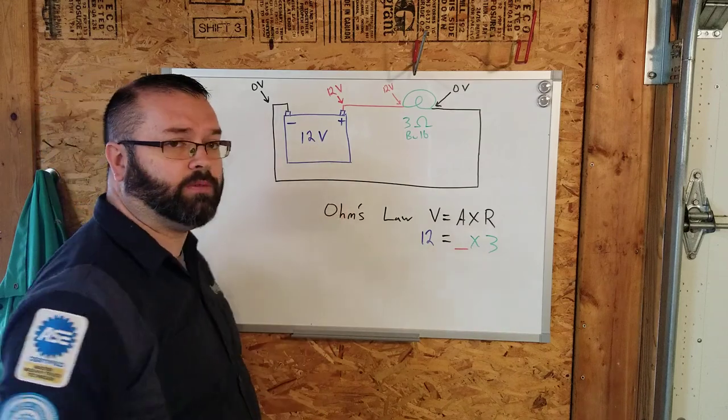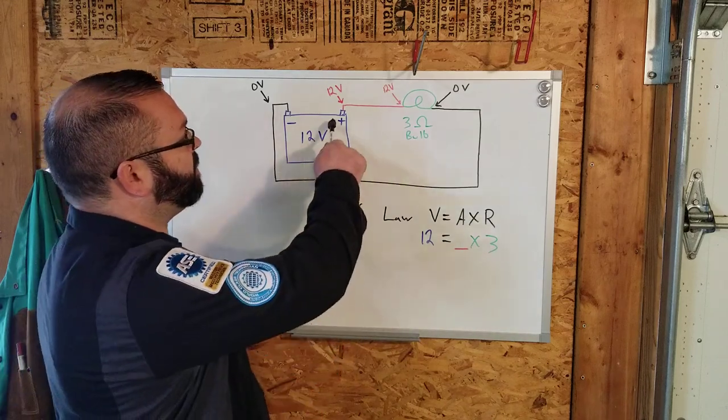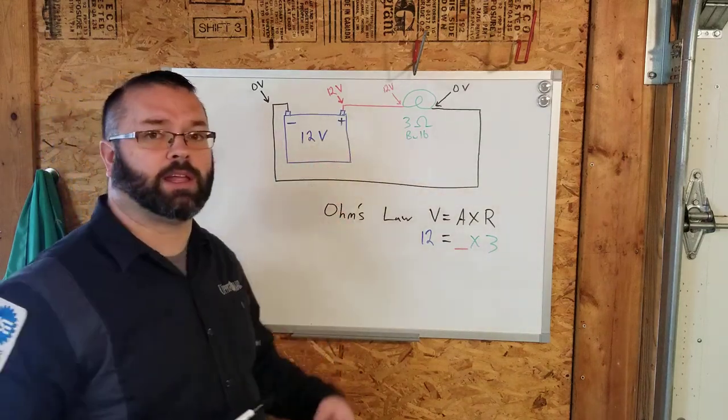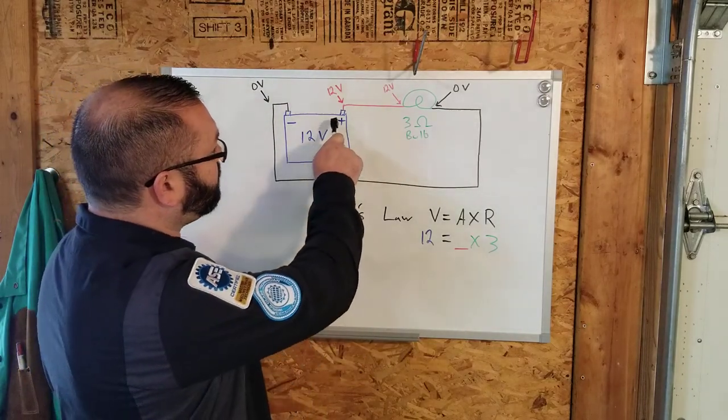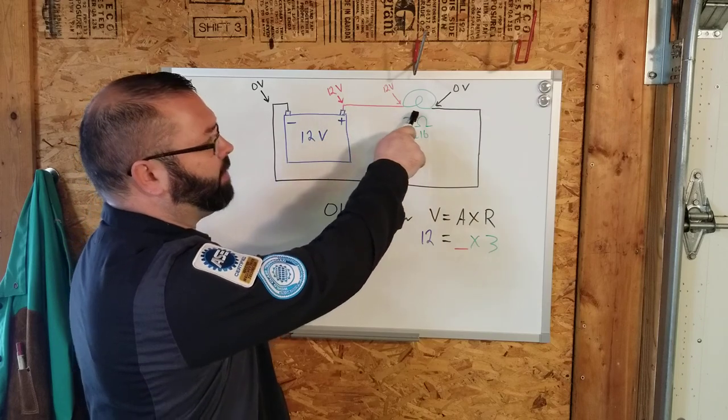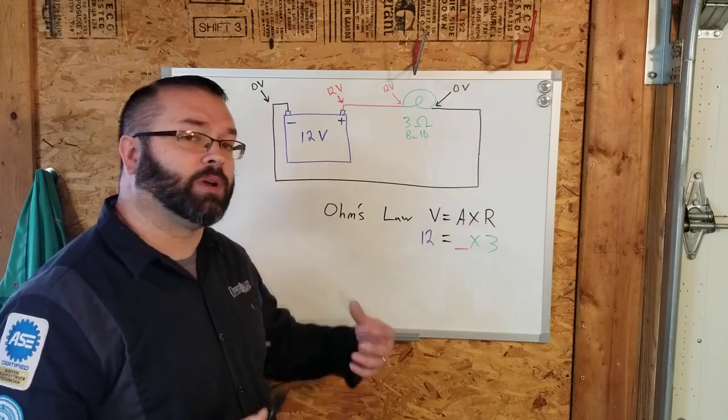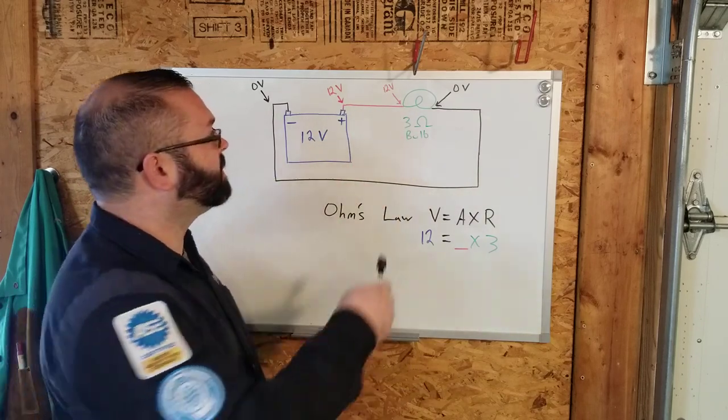Our battery is 12 volts as we go through the wiring. So if we follow this, it's just kind of like tracing a roadmap. We're going to do a lot of stuff with wiring diagrams this session. We're going to follow the wire along. We're going to hit a light bulb. If everything's working properly, the light bulb lights up.